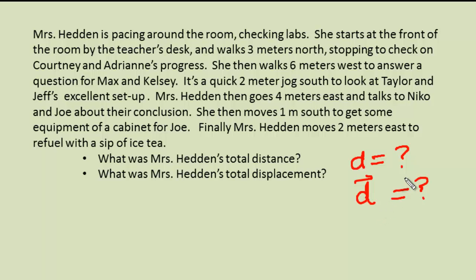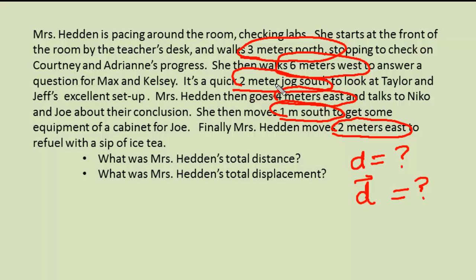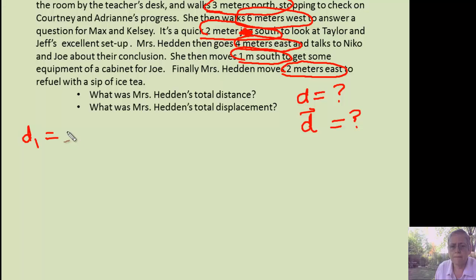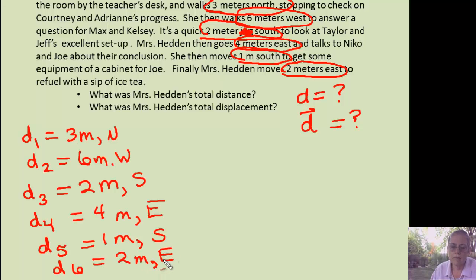Okay, now we're going to go back and look for the information. Since all we're interested in is distance and displacement, it doesn't really matter that Nico and Joe have to worry about the conclusion. It doesn't matter that Taylor and Jeff have an excellent setup. What does matter is what Mrs. Hedden's position is, what direction she's going in, and what units are we using. So going back and finding that in the problem, and really the easiest way is just to circle it so you don't lose things. Notice in the one, I've got 2 meters jogged south. The jog really doesn't matter to anyone except for Mrs. Hedden who doesn't like to jog. What matters? 2 meters because that's how far in the units, and south because that's the direction. Okay, then we're going to list all that stuff off to the side. So D1.